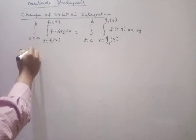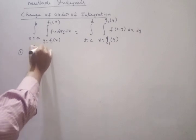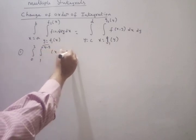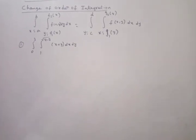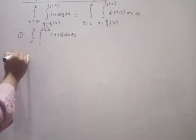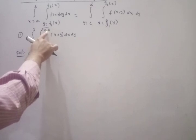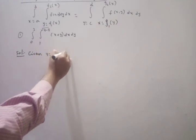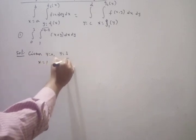The first problem: by changing the order of integration, evaluate the integral from 0 to 3 and from 1 to √(4−Y) of (X+Y) dX dY. So given: Y varies from 0 to 3, and X varies from 1 to √(4−Y). This is a function in terms of Y, meaning these are the limits of X and these are the limits of Y.